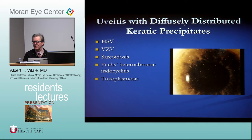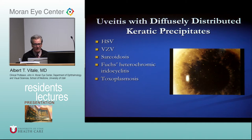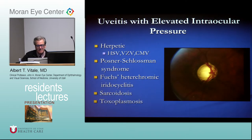The differential diagnosis of diffusely distributed KP includes herpes as number one, sarcoid, which can also give granulomatous or triangular distribution, Fuchs — which classically gives stellate KP — and toxoplasmosis.